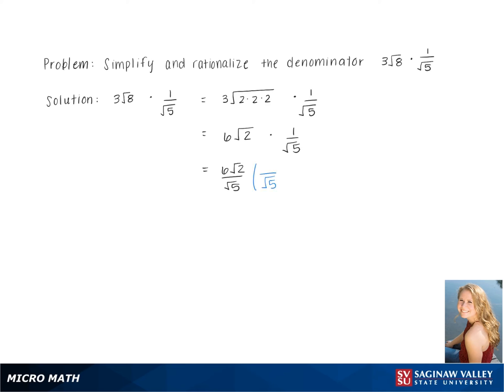Then, we rationalize the denominator, multiplying both the top and bottom of the fraction by square root 5. This gives us 6 times the square root of 10 over the square root of 5 times 5.